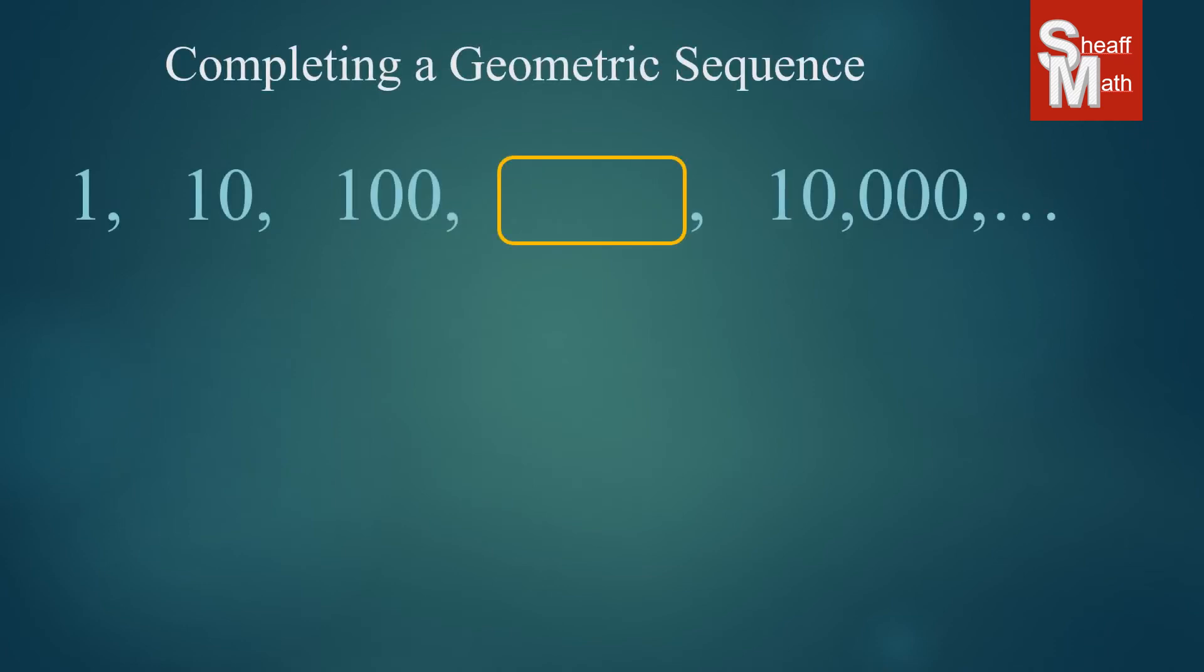All right, let's look at this one. This is a pretty typical one, and you probably can figure out what the number is. But just to show you that it works every time, we're just going to go through that process. The common ratio, we take two numbers, 10, and we'll divide it by the one before it. 10 divided by 1 makes 10. So everything's getting multiplied by 10. So we multiply 100 times 10, giving us 1,000.